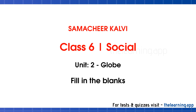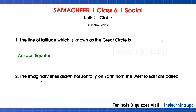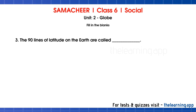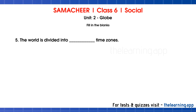Fill in the blanks. Question 1: The line of latitude which is known as the great circle is dash. Correct answer is Equator. Question 2: The imaginary lines drawn horizontally on Earth from the west to east are called dash. Correct answer is Parallels of latitude. Question 3: The 90 lines of latitude on the Earth are called dash. Correct answer is North Pole and South Pole. Question 4: The prime meridian is also called dash. Correct answer is Greenwich Meridian. Question 5: The world is divided into dash time zones. Correct answer is 24.